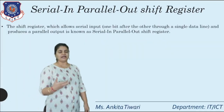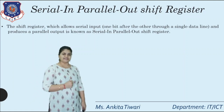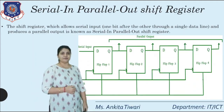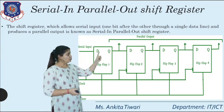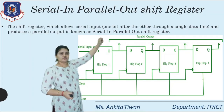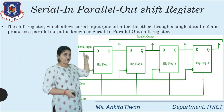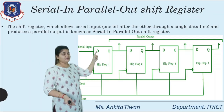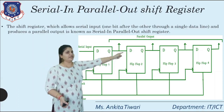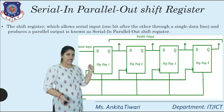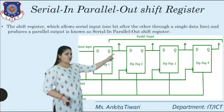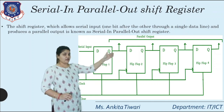Next is the Serial In Parallel Out (SIPO) shift register, which will be further detailed in the next session. In SIPO, the serial input is given at the first flip-flop, but the output is not taken serially — it is taken parallelly. As shown in the diagram, we take the example of shift right: the input passes through flip-flop one to two to three to four, but the output is taken individually from each flip-flop simultaneously.